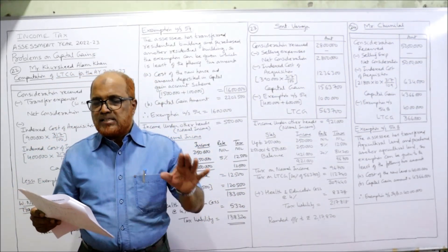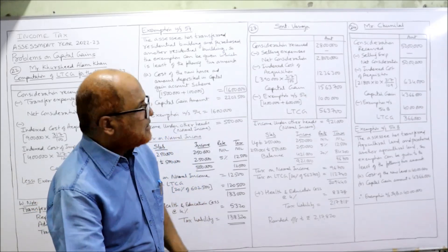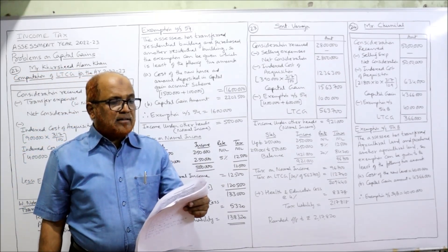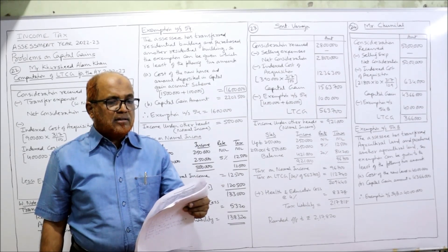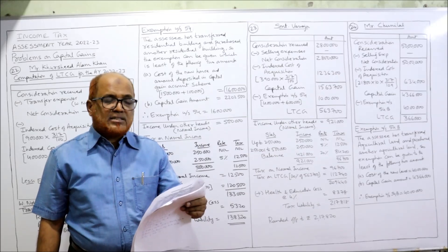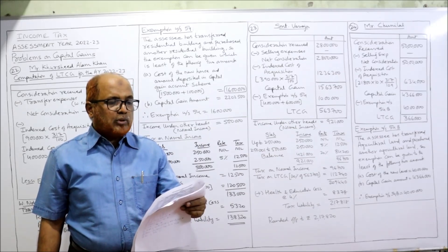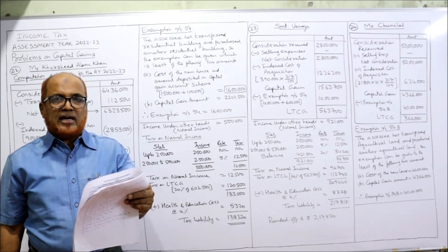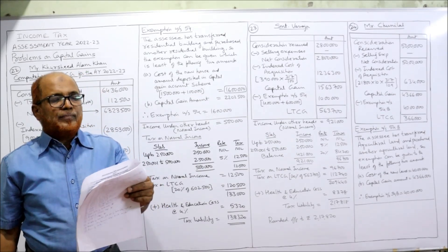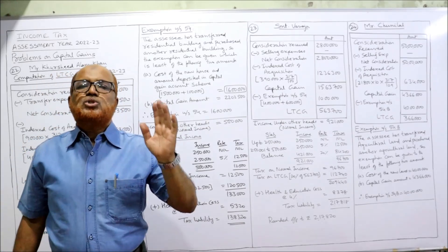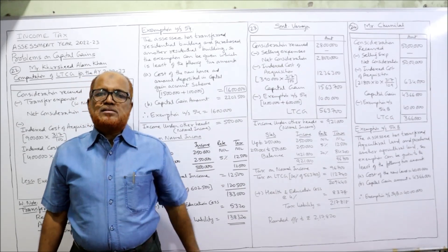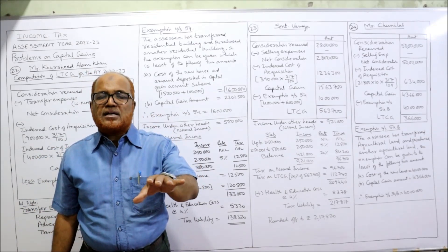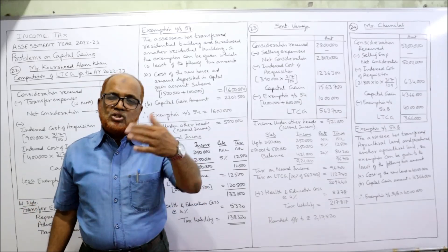Problem number 23: Srimati Vanaja sold her residential house for Rs. 28 lakh. The cost 16 years back was Rs. 3,90,000; cost inflation index was 100. After selling the house, within two months she started constructing a new house. Amount spent on construction up to the last day of the previous year: Rs. 4 lakh; and Rs. 6 lakh deposited in the bank under the capital gain account scheme 1988. Calculate income from capital gain and tax liability if income under other heads is Rs. 9,21,000.